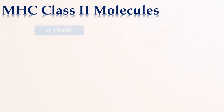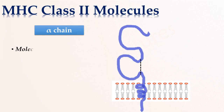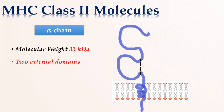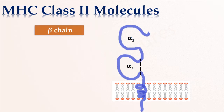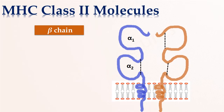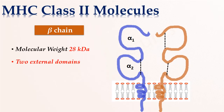The alpha chain has a molecular weight of 33 kilodaltons and contains two external domains: alpha-1 and alpha-2. The beta chain has a molecular weight of 28 kilodaltons and also consists of two external domains: beta-1 and beta-2.